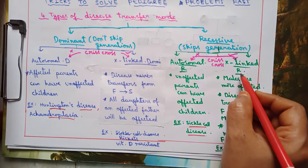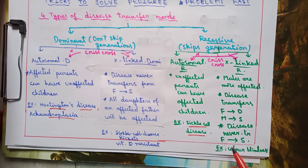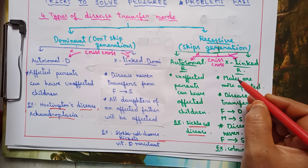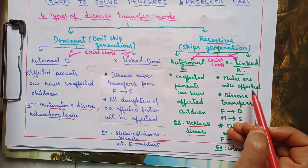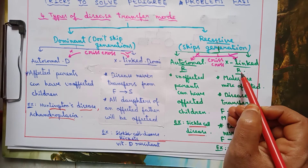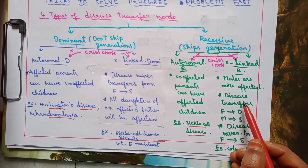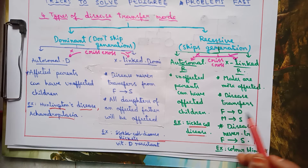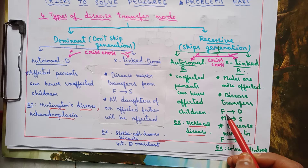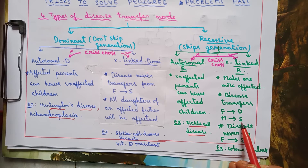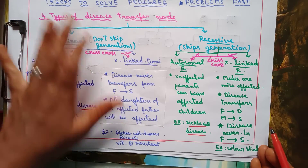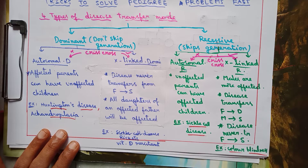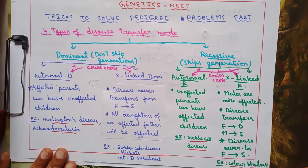To confirm x-linked recessive, we use two tricks. First, males are more affected — when males are predominantly affected, that indicates x-linked recessive. Second, the disease transfers from father to daughter and from mother to son, but never from father to son — this is the crisscross pattern. An example of x-linked recessive disease is color blindness.